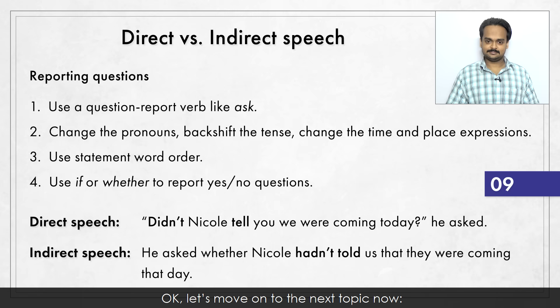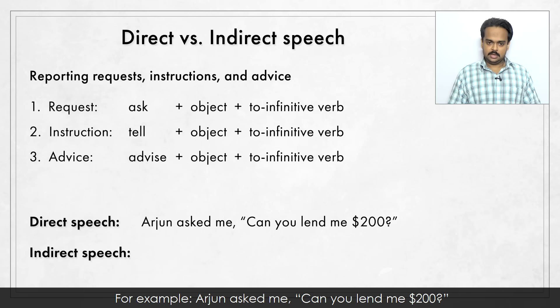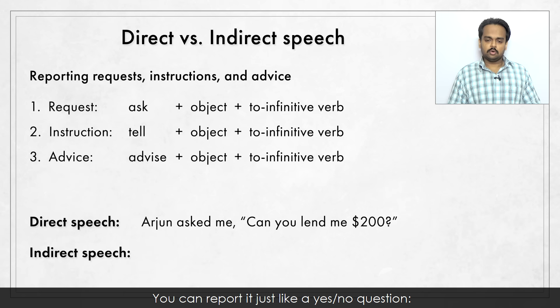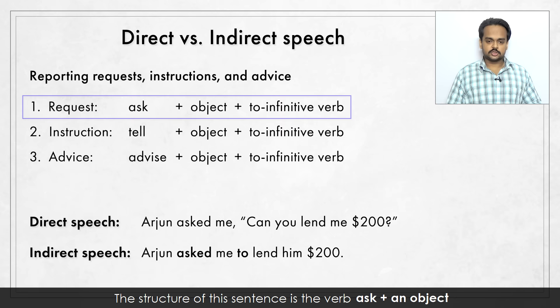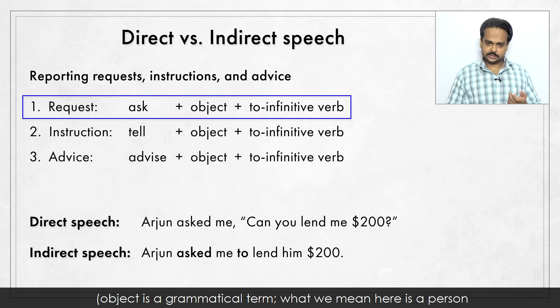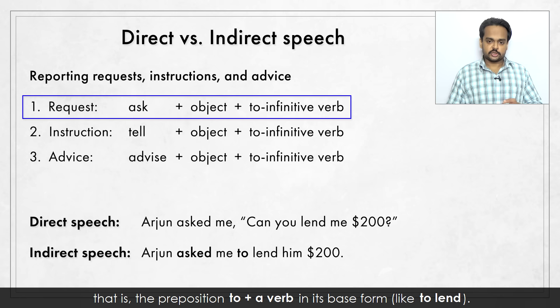Let's move on to the next topic – reporting requests, instructions and advice. When people make a polite request, they often phrase it in the form of a yes or no question. For example, Ajahn asked me, "Can you lend me two hundred dollars?" This is a request for a loan. You can report it just like a yes or no question: Ajahn asked me if I could lend him two hundred dollars. But there's another way: Ajahn asked me to lend him two hundred dollars. The structure of this sentence is the verb "ask" plus an object (a person), plus a to-infinitive verb – like "to lend".